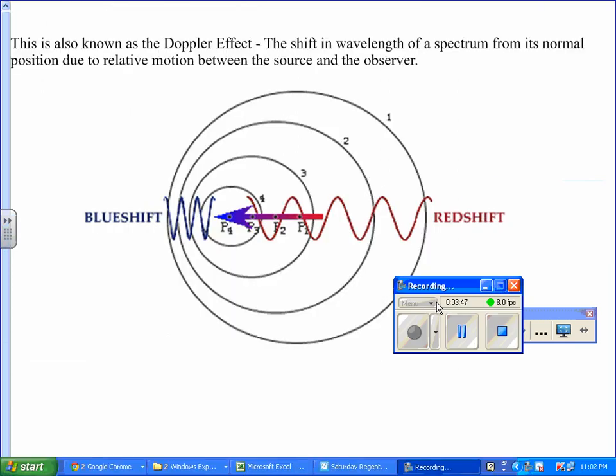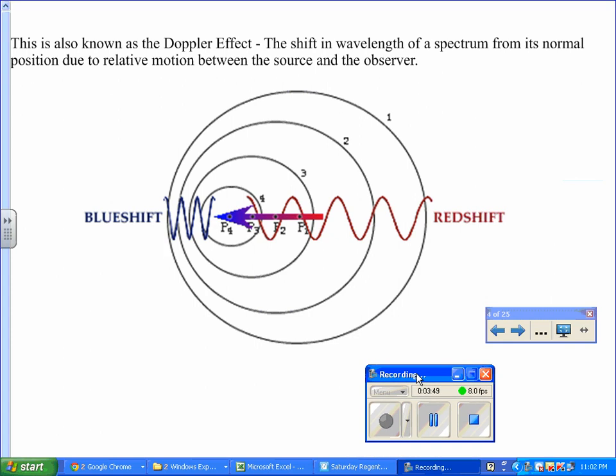This whole idea here is also known as the Doppler effect. The shift in wavelength of a spectrum from its normal position due to relative motion between the source and observer. If you have the object where sound or light is coming towards you, the wavelengths are going to be shorter. In this case, it's called the blue shift. If the wavelengths or the object is moving away from you, the wavelength is being stretched out. This is what we call the red shift.